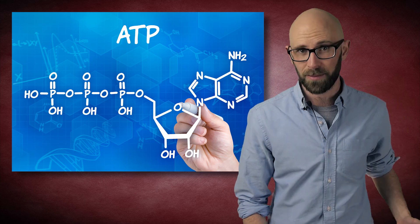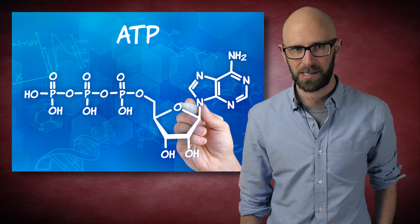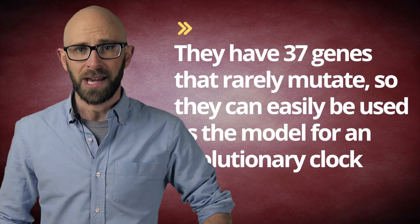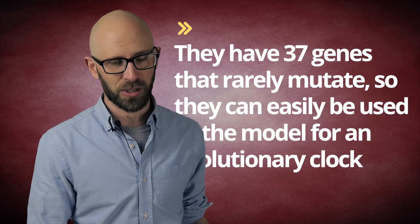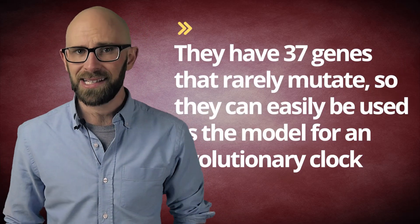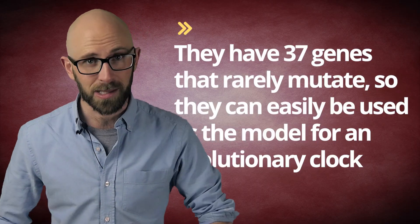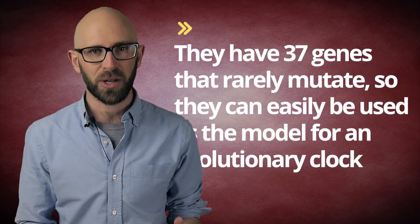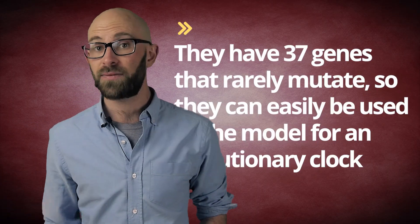The DNA found within mitochondria have two benefits. They have 37 genes that rarely mutate, so they can easily be used as the model for an evolutionary clock. And these same genes have subsections that mutate in a predictable manner, so biologists can use it as a reference for age.